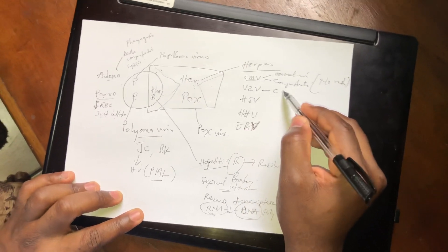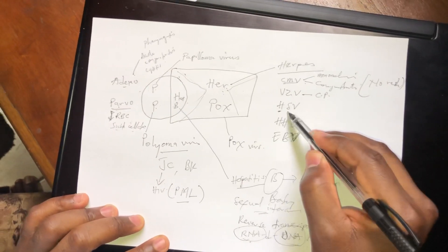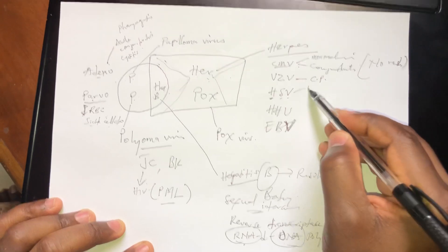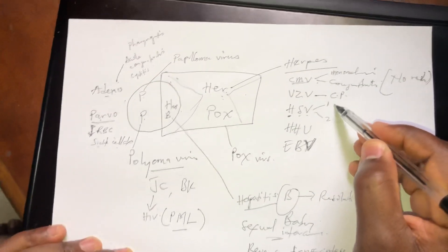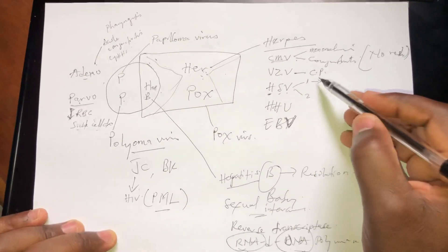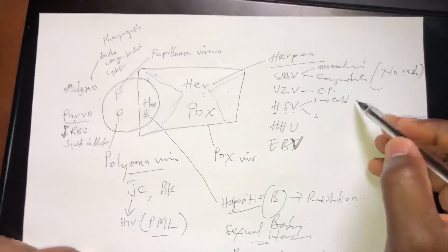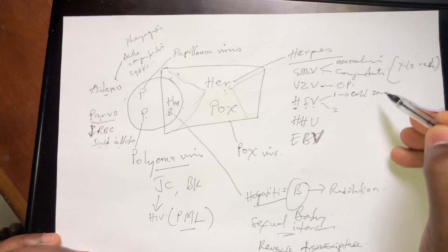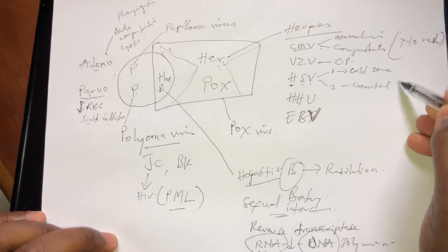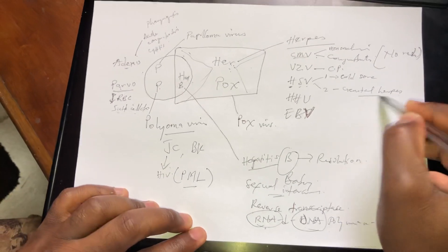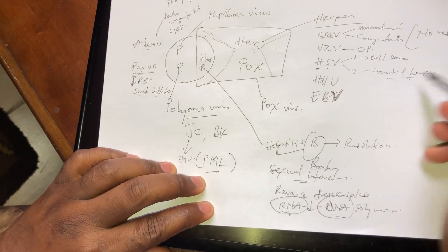We also have VZV that can cause chickenpox. And we also have HSV — herpes simplex virus. We have HSV1 and HSV2. HSV1 usually causes infection above the belt — for example, cold sores on the lips. So if you see vesicles on the lips, painful cold sores, it's most likely HSV1. HSV2 will be genital herpes, which usually presents in females with maculopapular rash on the vulva that has vesicles and is painful.